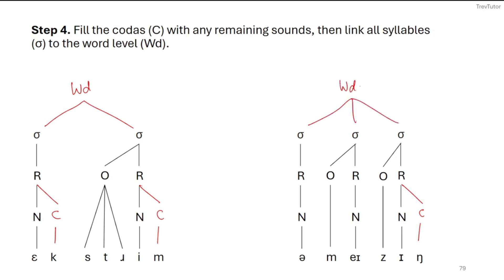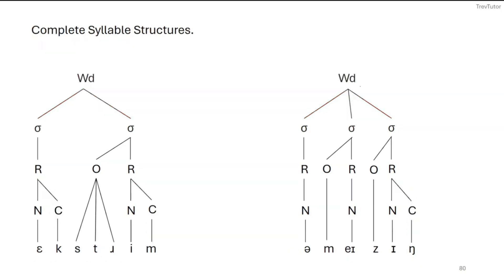So that is how we can form syllable structures in English. We have our final syllable structures for these two words: ek-stream and a-may-zing. These might take a little bit to get used to, but it's a very systematic process — if you can do it for one word, you can do it for pretty much any English word. There might be some more complex cases where a coda and onset are basically shared by the same sound, but that typically waits until a second course in phonology.